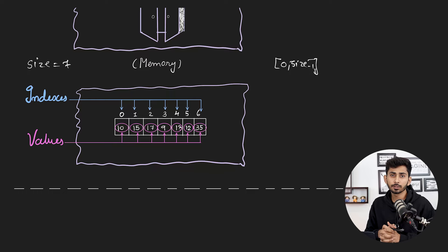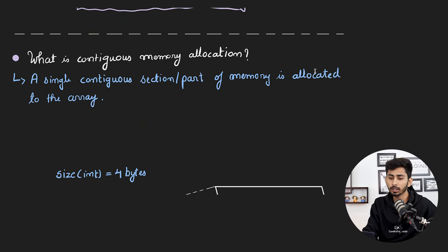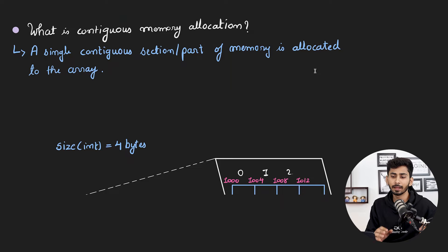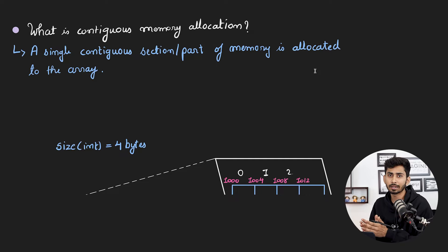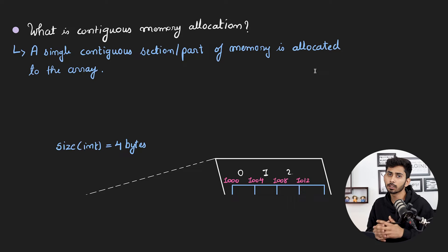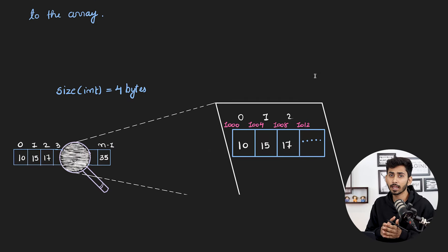While discussing the formal definition of an array it was mentioned that contiguous memory allocation is done to an array. A single contiguous section of memory is allocated to the array. You can think of it as an apartment complex where each apartment is adjacent to the next, and each apartment is given a sequential number — say 1000, 1001, and so on. Similarly, each cell inside an array is given contiguous memory allocation.